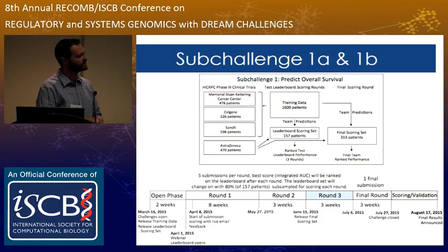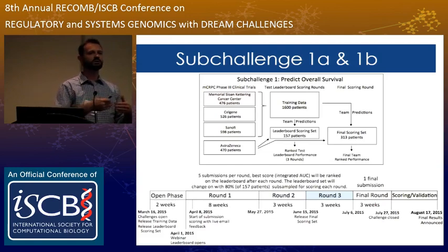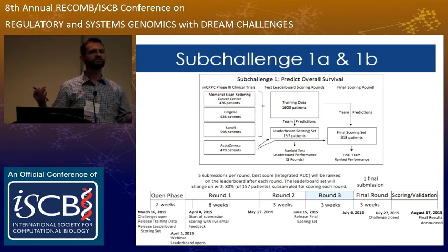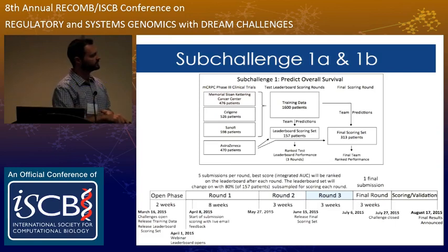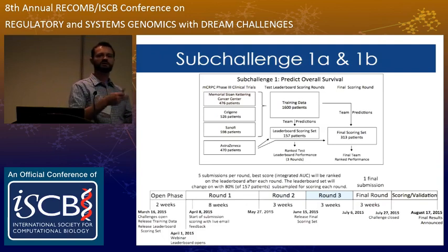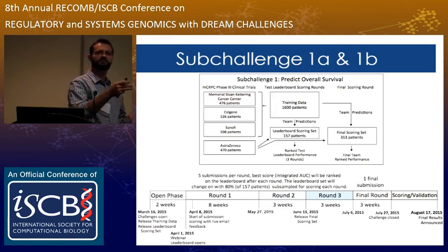The challenge was designed with a couple of different rounds. Sage Bionetworks did a fantastic job setting up these leaderboards. People submitted predictions directly through the Sage Synapse platform, got scored, and received an email back showing performance relative to a random model. Over three rounds, we shuffled the 157-patient test dataset and gave each team five submissions per round, trying to allow submissions without allowing overfitting. Then we gave about three weeks for the final submission — one shot on goal — to determine the winners.